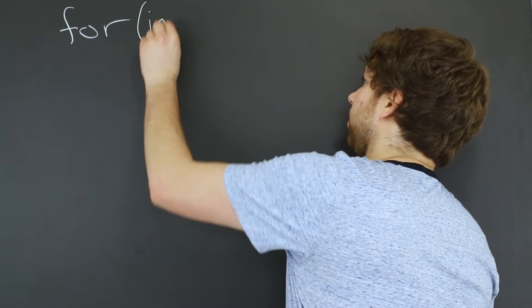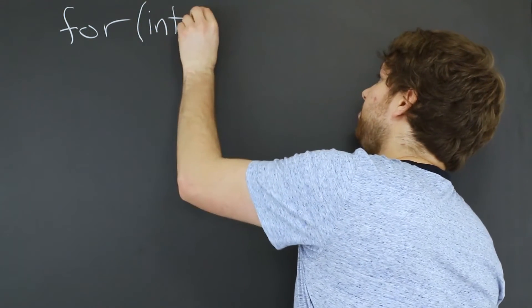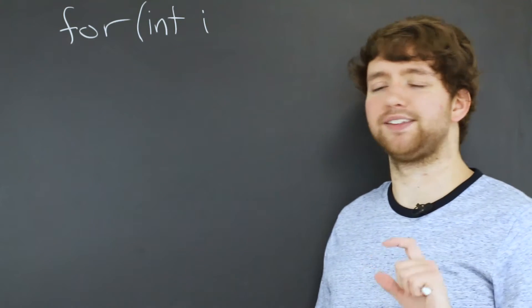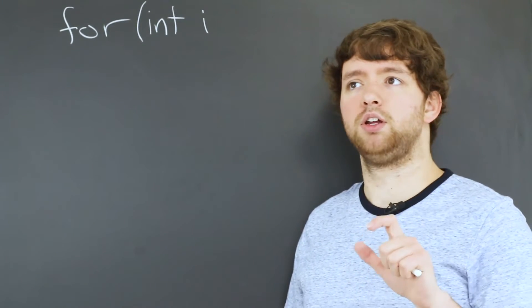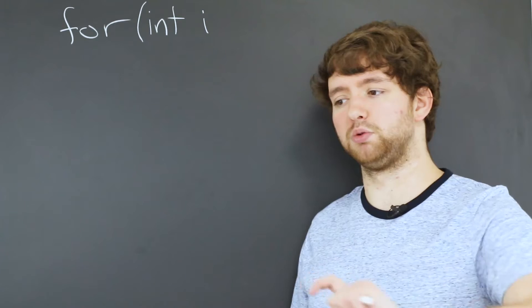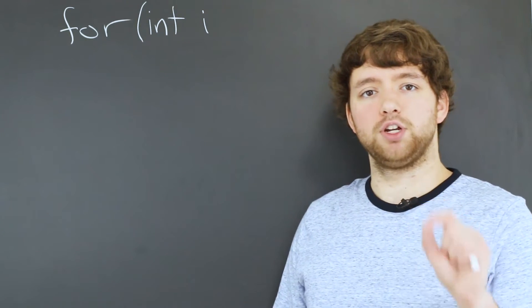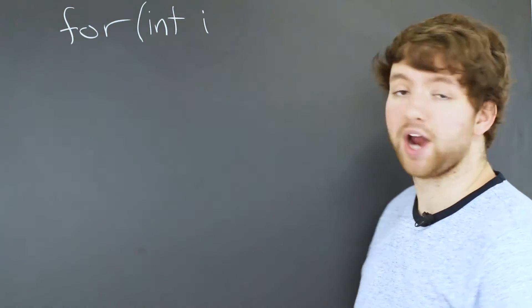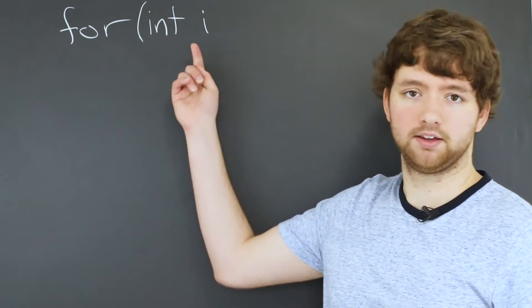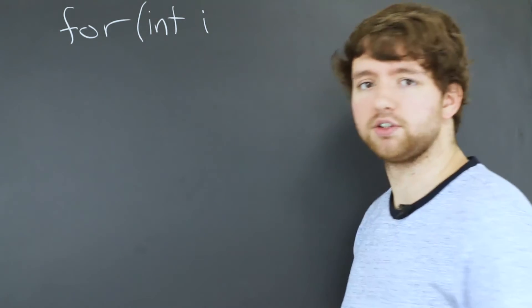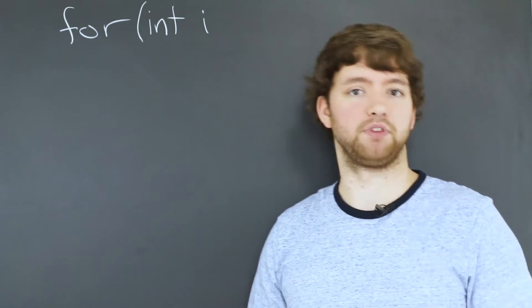The first thing is the initialization, so you can actually create a variable in here. Typically it's known as i, and you can think of it as an iterator because every single time we go through this loop it's called an iteration. So each iteration we can keep track of what iteration we're on using this variable i. For now just know it's typically called i if it's something very simple, but you can use anything in these for loops.